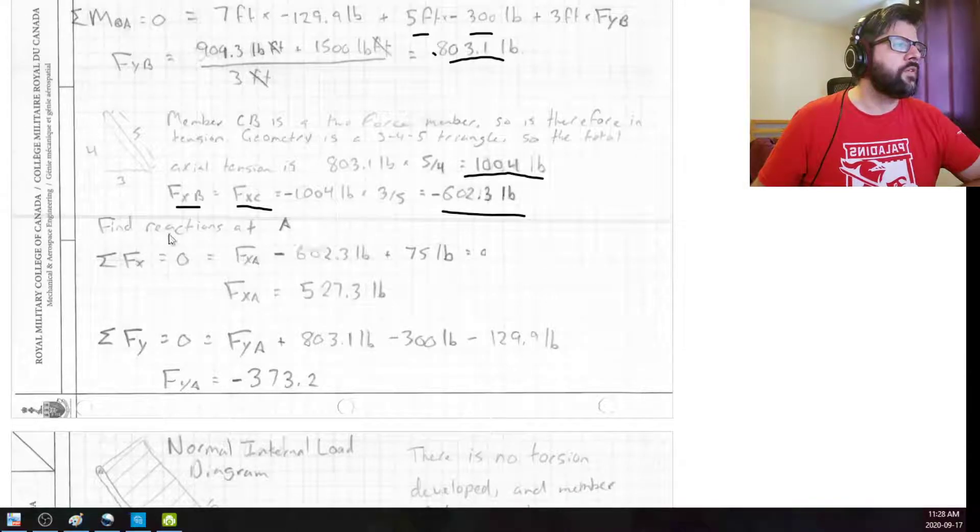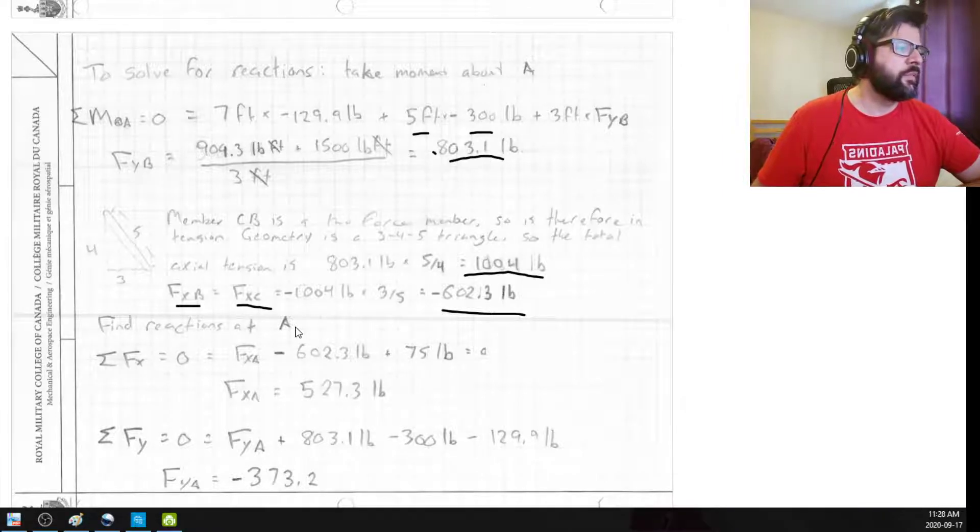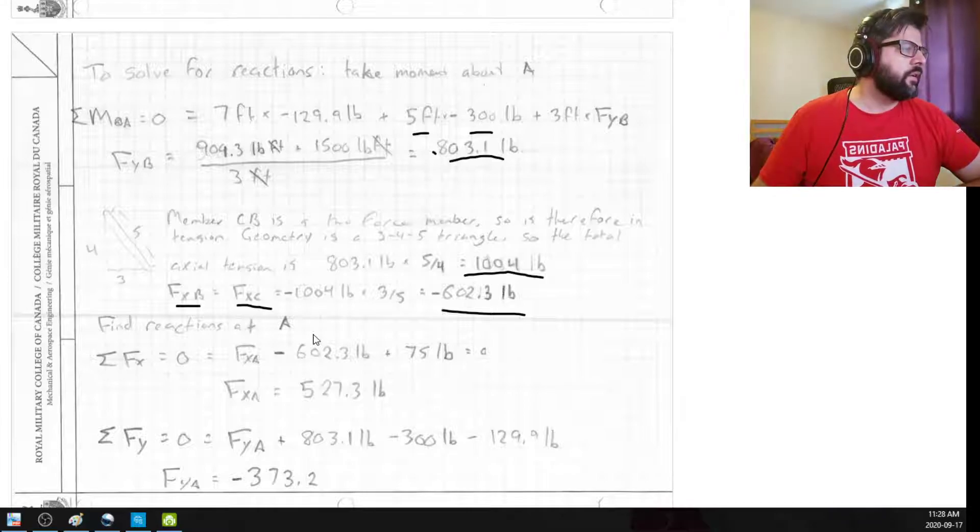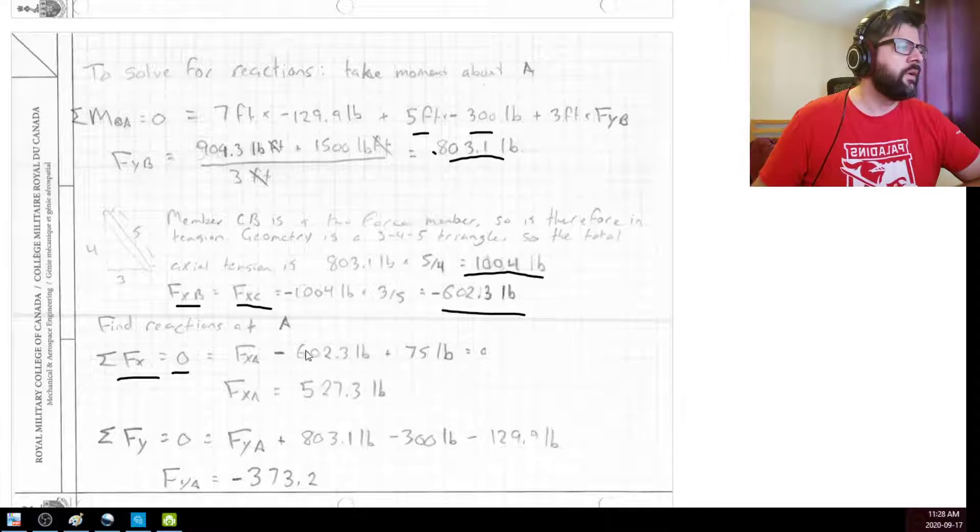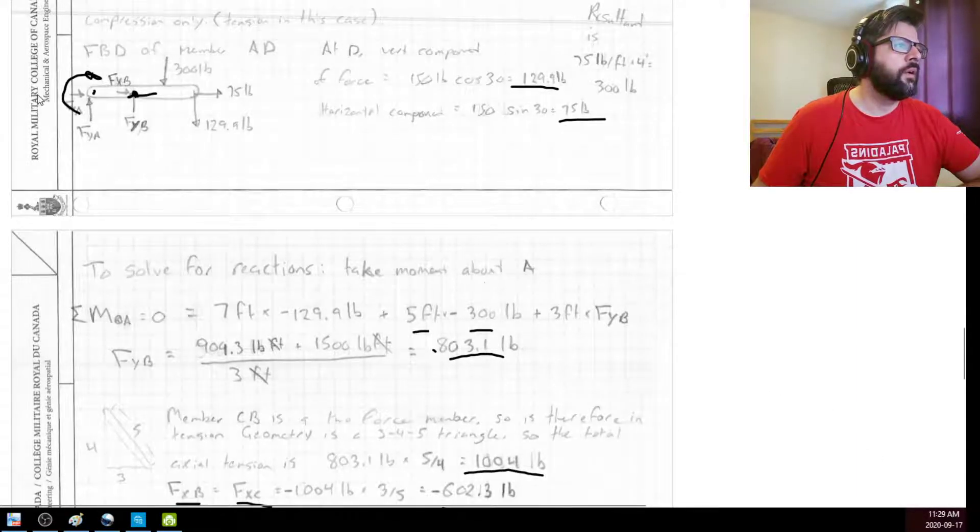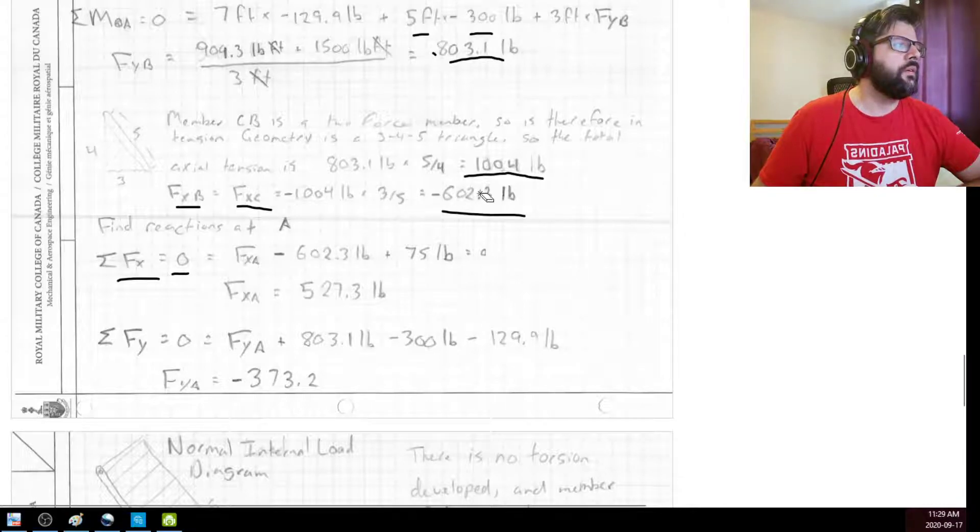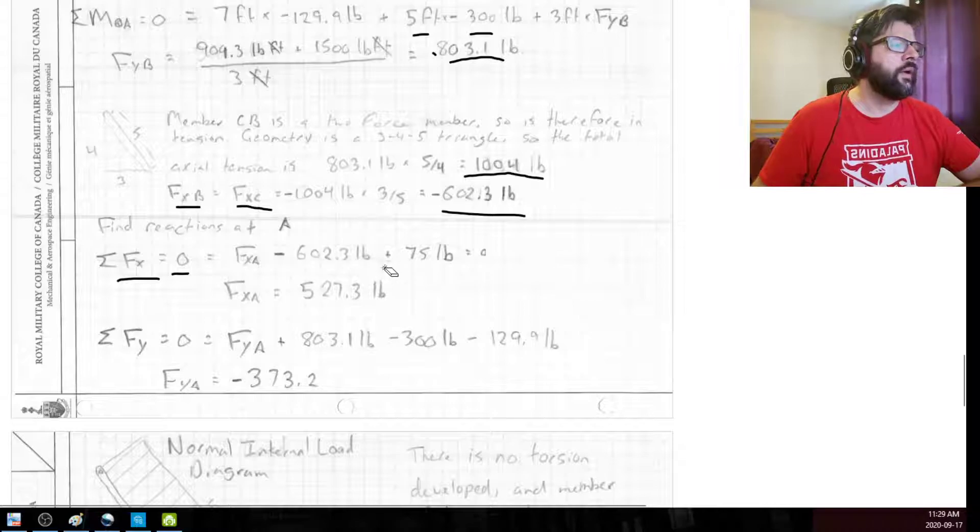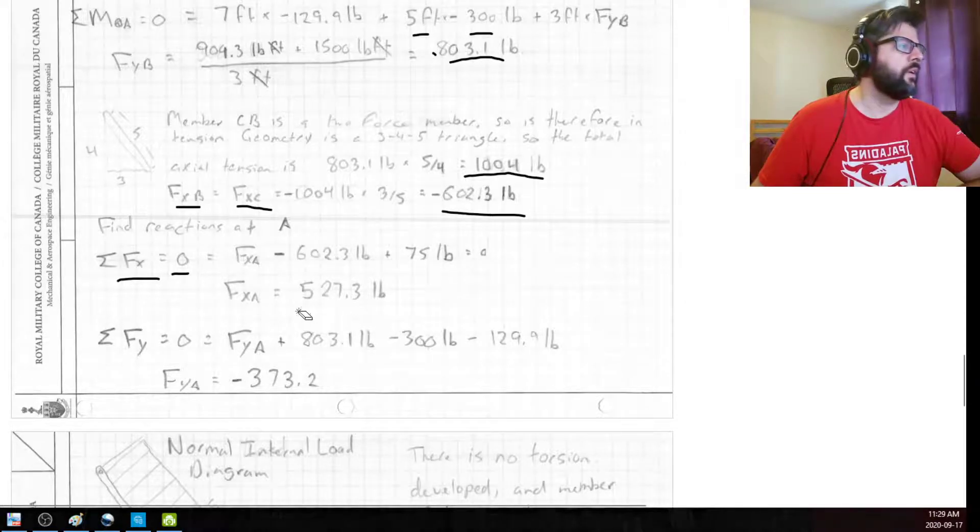So the reactions at A, in order to find those, simple enough. We just equal our forces. So we got our sum of the total forces in the X direction. That's equal to zero. And again, we've only got a couple things there. We've got the FXA. We've got the 602, acting to the left. So that's negative. And then we've got the 75 pounds as the horizontal component of our tension from the cable. That's equal to zero. That gives us our FXA of 527.3.